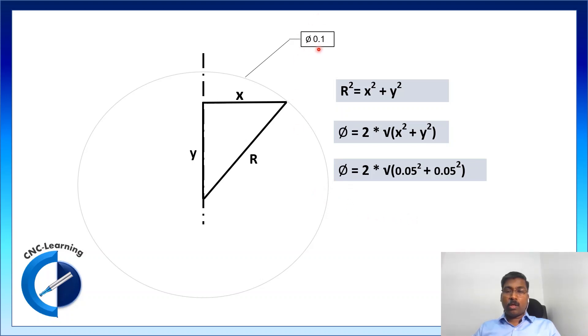Now, the tolerance given is 0.1. So, if we assume 0.05 for x and 0.05 for y, then the position tolerance in diameter will be given by this. And if we calculate, it will be 2 multiplied by 0.07, that is 0.14.